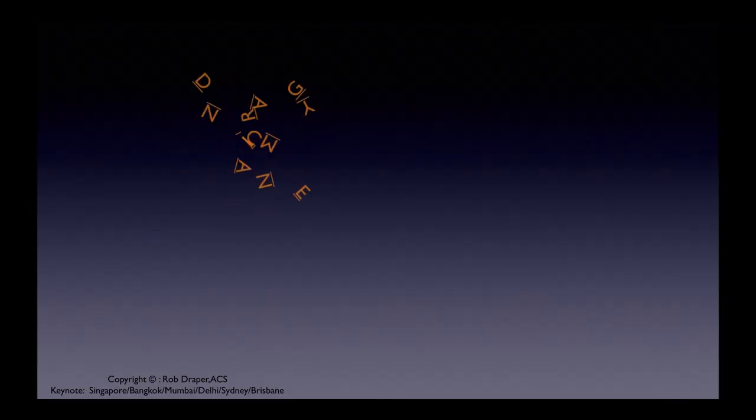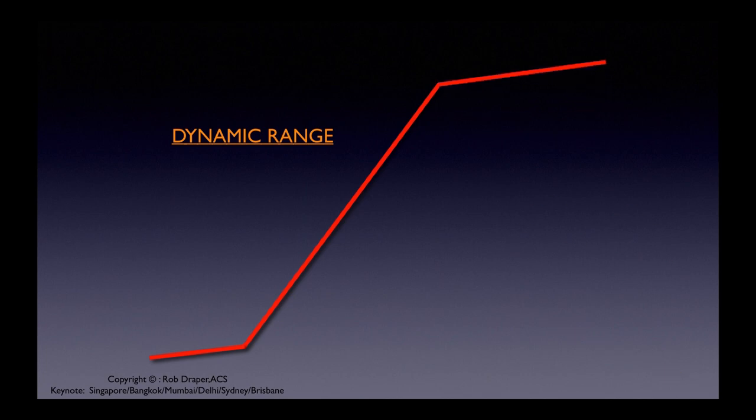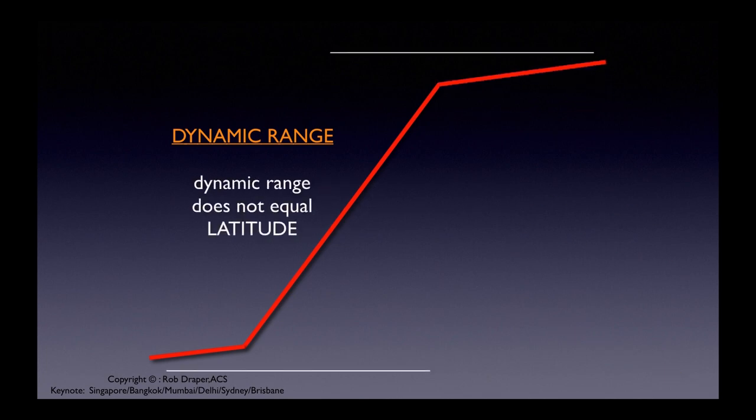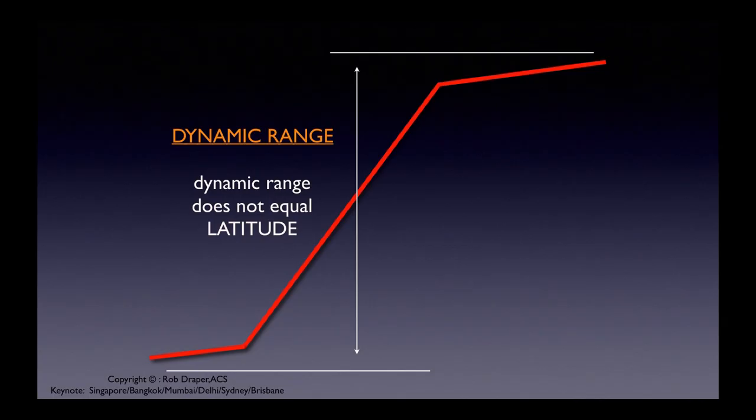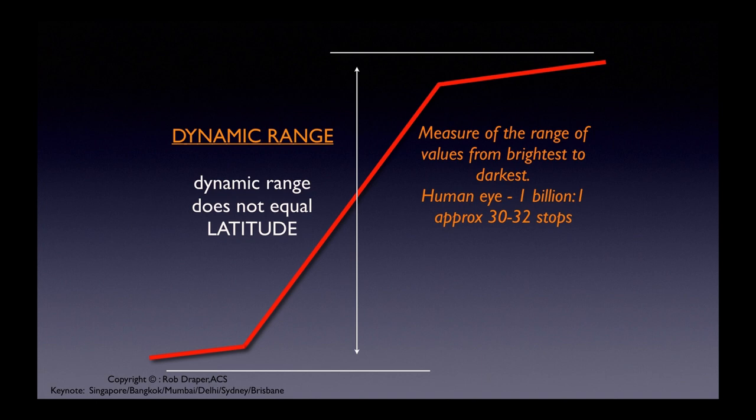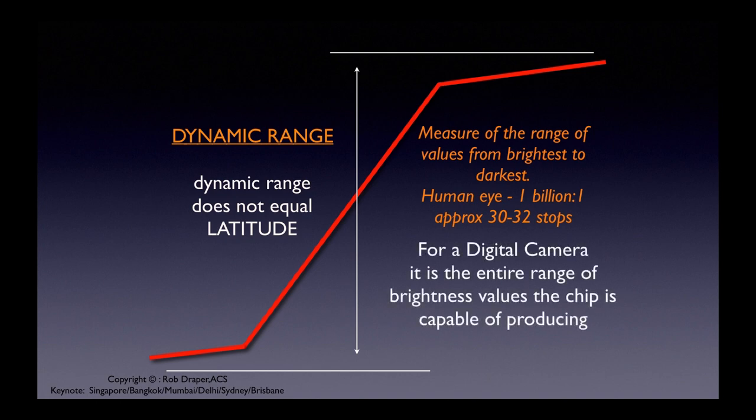Everyone is sold on dynamic range and everyone works off dynamic range, but what we should be working off is latitude. So what is dynamic range? Dynamic range is the range from the brightest element that can be recorded in a scene to the darkest element that can be recorded. The human eye can see 30 to 32 stops, which is a ratio of about a billion to one. Obviously no camera in existence can do that, but for a digital camera the dynamic range is the range from the brightest to the darkest element that can be recorded by the chip. So when someone says you've got a dynamic range of 12, 13, 14, or 15 stops, that's a theoretical value from the brightest to the darkest element recordable by the chip.